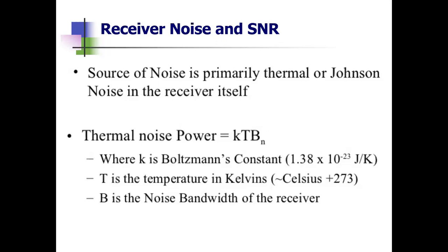Suppose the receiver is perfect — completely noise-free — and operates in a noise-free environment, meaning it does not generate any excess noise. Even in that ideal scenario, there would still be a noise called thermal noise or Johnson noise in the receiver. This thermal noise is generated by thermal agitation of conduction electrons in the ohmic portion of the receiver input stages, and it cannot be ignored.